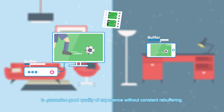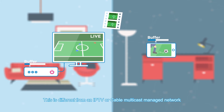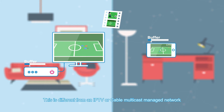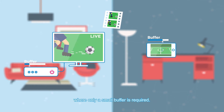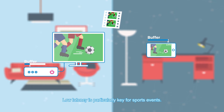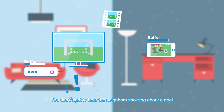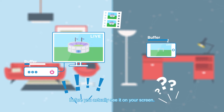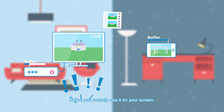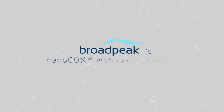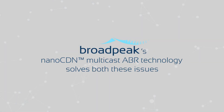In order to cope with HTTP best-effort delivery, a player needs to buffer 10 seconds of video to guarantee good quality of experience without constant rebuffering. This is different from an IPTV or cable multicast managed network where only a small buffer is required. Low latency is particularly key for sports events — you don't want to hear the neighbors shouting about a goal before you actually see it on your screen.